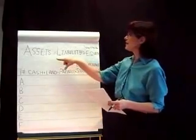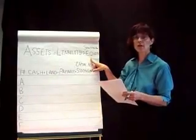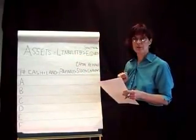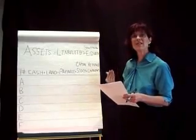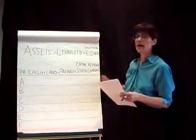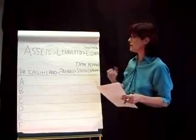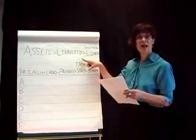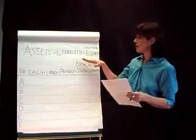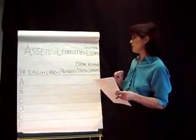The basic accounting equation is assets equal liabilities plus stockholders' equity. An asset is a resource owned by the business — probably one we'll be using a lot today is cash, a very important asset whose balance is constantly changing, in my personal bank account and in the business. Liabilities, in one word, are debts — anyone that the company owes money to is a liability.